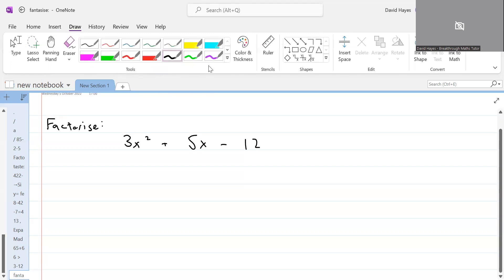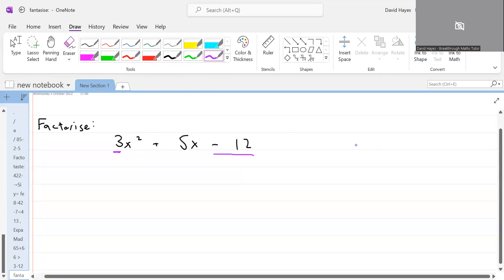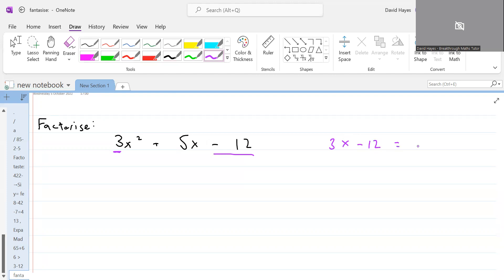Step one, we take the number that's in front of the x squared term, and we take the number on its own, and we multiply the two of them together. So I'm going to take 3, multiply it by minus 12, and we will get minus 36.